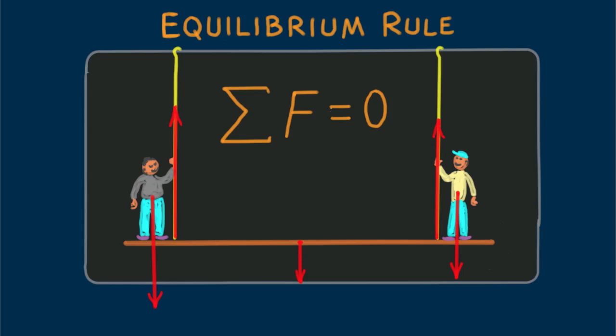The equilibrium rule says that the downward forces are matched by upward forces. That the upward tension in Burl's rope plus the upward tension in my rope minus Burl's weight minus the weight of the scaffold minus my weight equals zero.